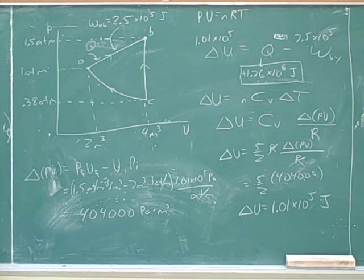If you look in the top, you can see that for any process you can use C sub V to find the energy. But the only time you would use C sub V to find the heat is for a constant volume process. That's what the V stands for. To find the heat for a constant pressure process you would use C sub P.